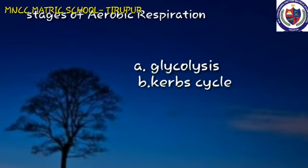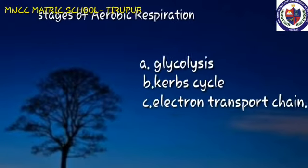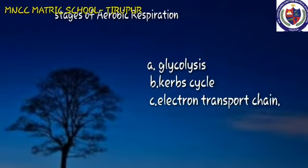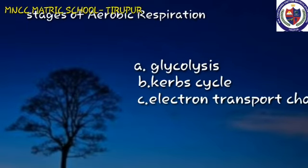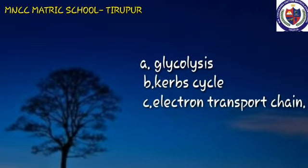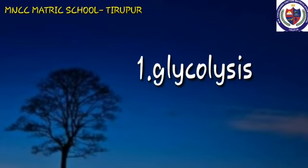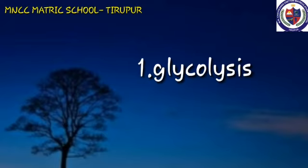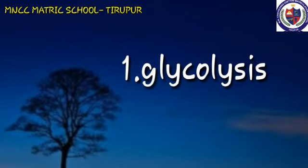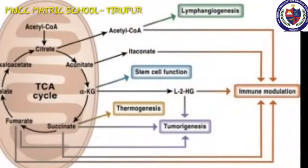Stages of aerobic respiration: Glycolysis, Krebs cycle, and electron transport chain. Glycolysis is the breakdown of one molecule of glucose into two molecules of pyruvic acid. Glycolysis takes place in the cytoplasm of the cell.